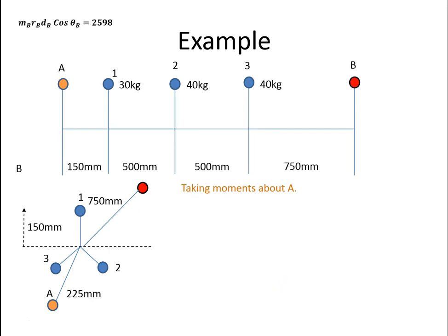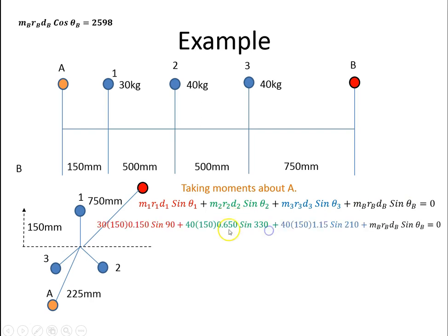Now we do the vertical component of the moments about A. So it'll be M1R1D1 sine θ1, sine θ2, sine θ3, and sine θB. I'll plug the values back in again. So M1 was 30, the radius was 150, the distance from A was 150 millimeters, which I converted to meters, so that's 0.15. And now it's sine of the angle, so the sine of 90.